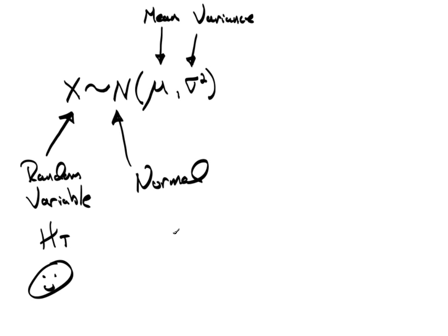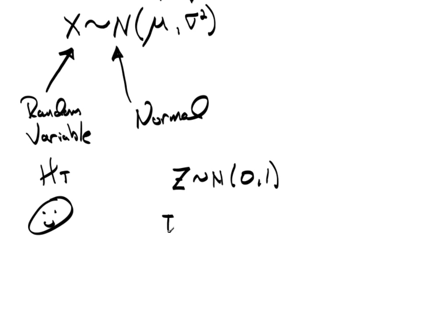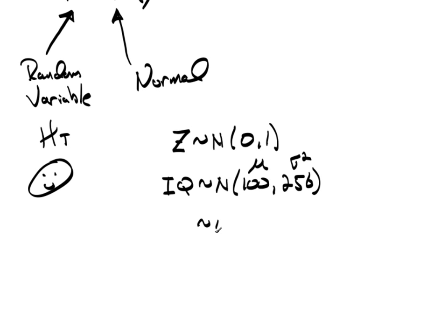So a standard normal, we actually use Z to represent a standard normal. Z is distributed normal with a mean of 0 and a variance of 1. IQ scores are believed to be normal with a mean of 100 and a variance of 256. See, right away, I know this is mu, this is sigma squared. I could also write that as being normal 100, 16 squared. You can see the square root of 256 equals 16.